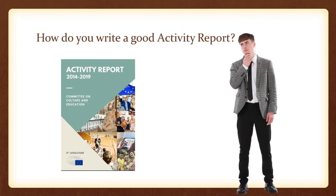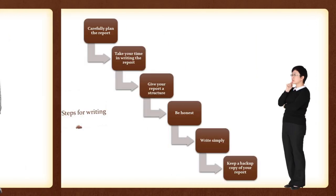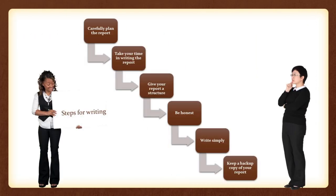Now, let's take a look at how do you write a good activity report. The first step towards writing a good report is always to carefully plan your entire report. Remember to create a skeleton of the report so that you have all the information at your fingertips and you don't forget to include any part of the information that needs to go into the report. Secondly, take your time in writing the report. Don't be in a hurry to submit the report. Even though you should submit the report before the deadline, give yourself enough time to think about it and write it carefully without mistakes.